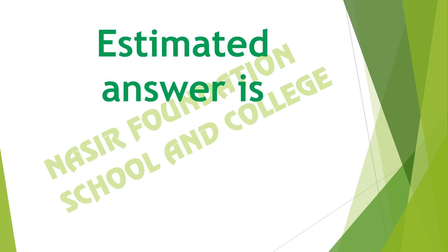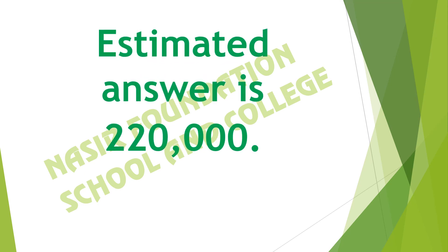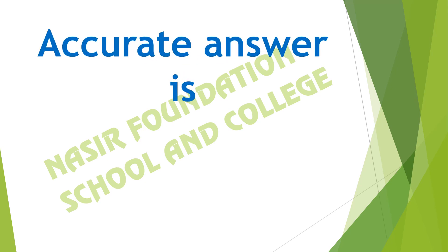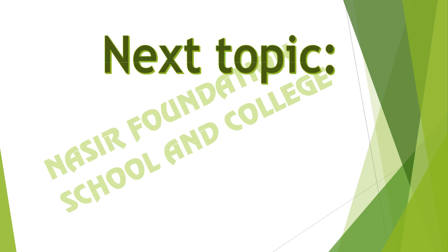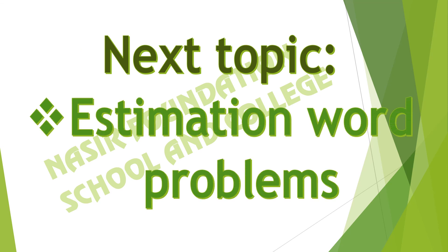Our estimated answer is 220,000, whereas our accurate answer is 213,901, and 213,901 is nearly equal to 220,000. In this video we discussed estimation of six digit numbers. In the next video we will learn estimation word problems. Take care of yourselves. Allah Hafiz.